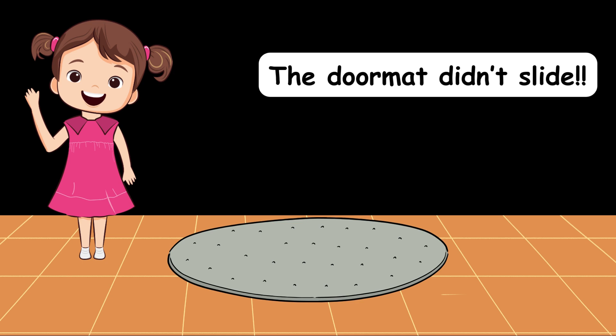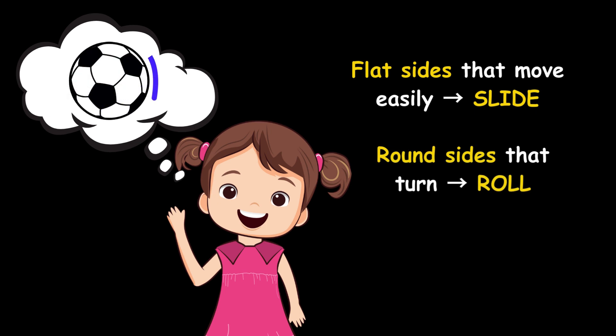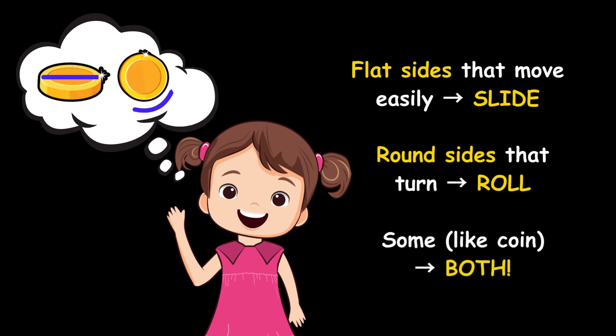She sat quietly and thought about everything she had done till now. Okay. Things slide when they have a flat side, but also can move easily. Things roll when they have a round side, but they should also turn easily. And just like the coin, there are some things that can do both.